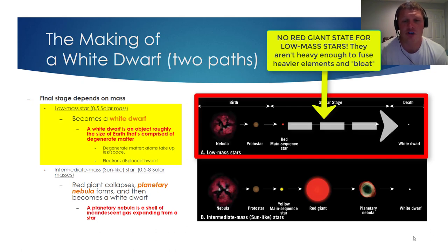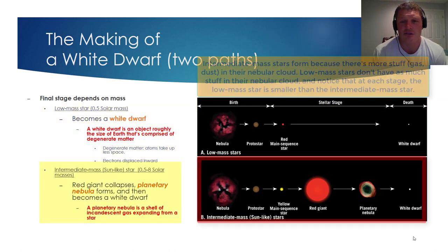These stars will skip the bloated giant phase and collapse into hot, dense white dwarfs. By definition, a white dwarf is an object roughly the size of Earth that's comprised of degenerate matter. And just so you know what degenerate matter is, it's matter that takes up less space. You can almost imagine this as squishing atoms really close together. The white dwarfs formed by low-mass stars will typically be smaller than planet Earth.